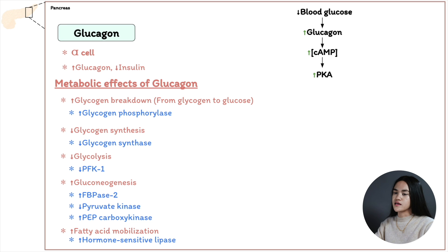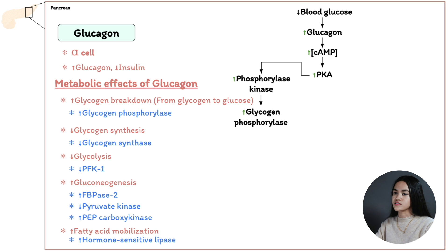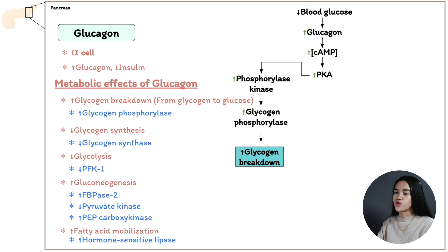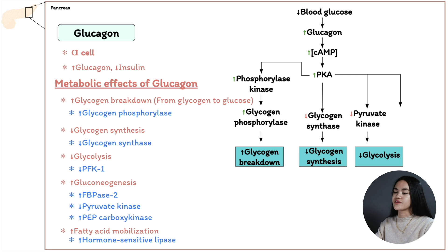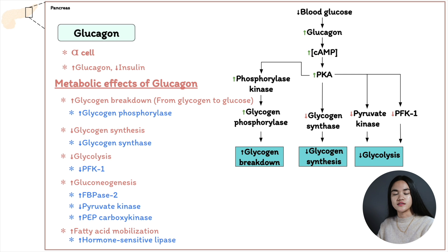Protein kinase A phosphorylates phosphorylase kinase, activating glycogen phosphorylase and therefore activating glycogen breakdown. Protein kinase A also phosphorylates glycogen synthase, but this inactivates it, inhibiting glycogen synthesis. Additionally, protein kinase A inactivates PFK1 (phosphofructokinase 1), inhibiting glycolysis.